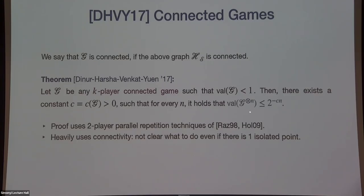The theorem by Dinur, Harsha, Venkat, and Nguyen states: if the game is connected — meaning this graph is connected — then there is exponential decay. The proof uses two-player parallel repetition techniques of Raz and Hollenstein. However, the proof heavily uses that the graph is connected. If the graph has even one isolated point alongside a big connected component, it's not clear what to do.